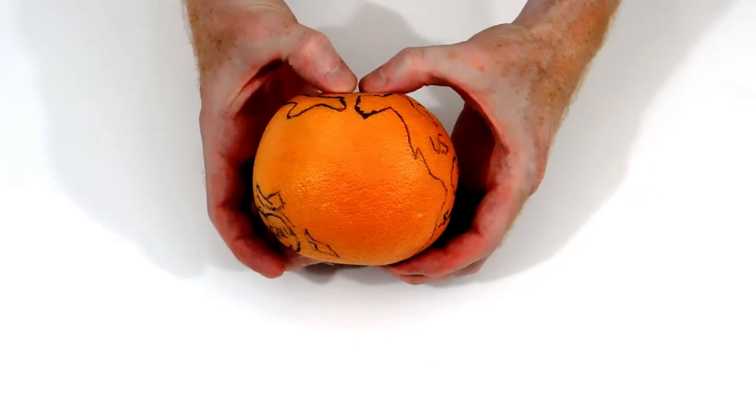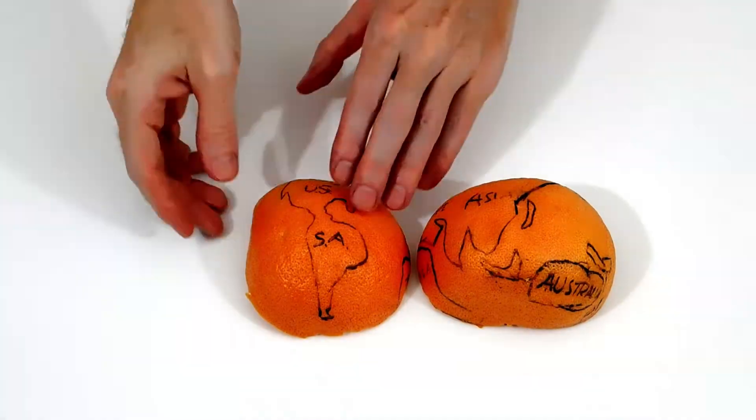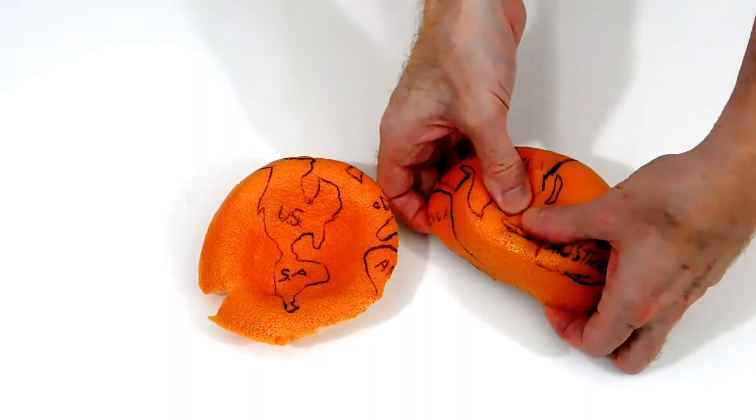To demonstrate why this happens, we've drawn some countries on this fruit. When we try to lie the skin flat, it's impossible to do unless we make a few cuts or stretch the skin.